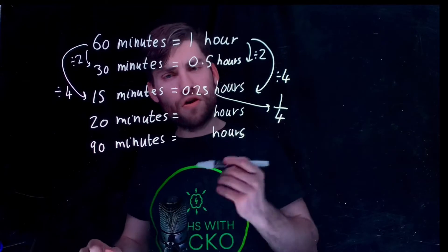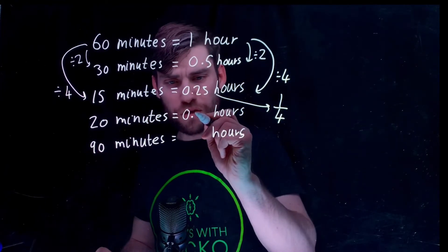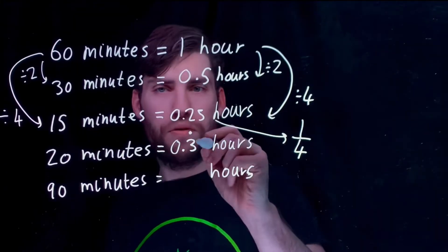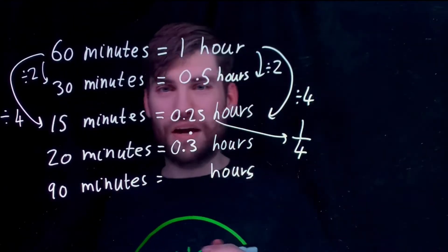Now, 20 minutes, that's a third of an hour and a third as a decimal is 0.3 recurring. Very important, that recurring, that dot. It's 0.3333333 and so on.